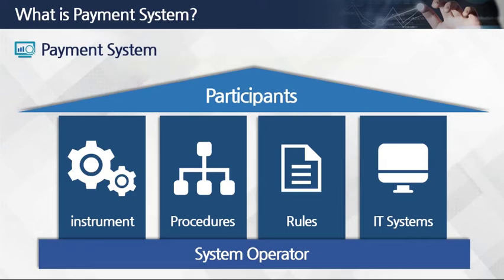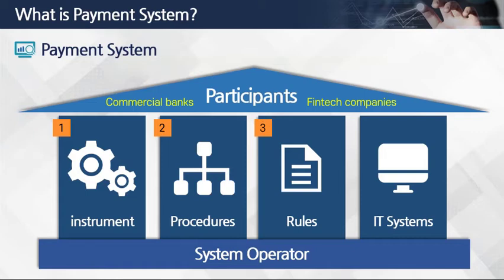So, it is usually compared to a house made up of a roof, four pillars, and a foundation stone. The roof represents participants — the most typical being commercial banks, but nowadays a variety of non-bank organizations like fintech companies are also participating. The four pillars are instruments, procedures, rules, and IT systems. And the foundation stone is the system operator.